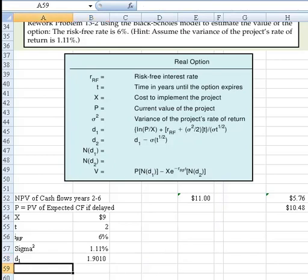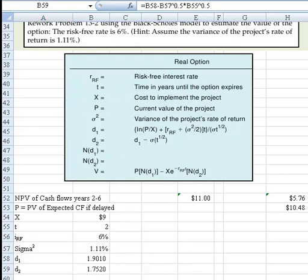Next we need to figure out what d₂ is. I've worked that ahead as well. Let me hit F2 so you can see how I got it. As you can see, we take the value of d₁ from cell B58, and then we subtract the standard deviation of the project's rate of return. We take the variance and raise it to a power of one-half, then multiply that times the time horizon, the time in years until the option expires, which we have in cell B55, also raised to a power of one-half. When we do that, we come up with the value of d₂ as being 1.7520.